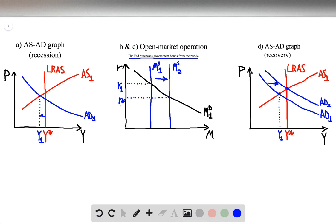Part D asks us to draw a graph similar to the one in part A to show the effect of the open market operation on output and the price level. Here on the right, I have recreated the first graph. But now, we know that the Fed's purchase of government bonds will stimulate aggregate demand. So, the aggregate demand curve shifts from AD1 to AD2.